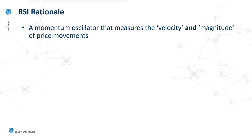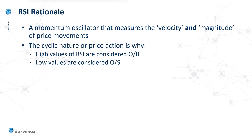Of course, price rarely just travels in one direction. Instead, it is very often cyclic in nature, and we see this behaviour even in strong trends where we have pullbacks throughout the trend. And it's this cyclic behaviour that causes the relative strength index to fluctuate between overbought and oversold.